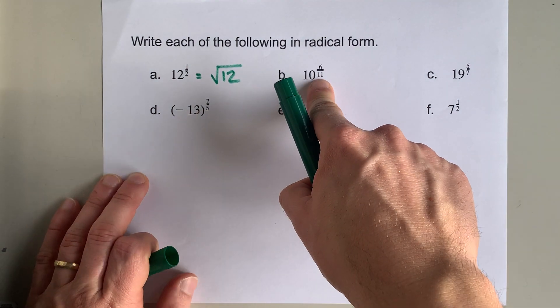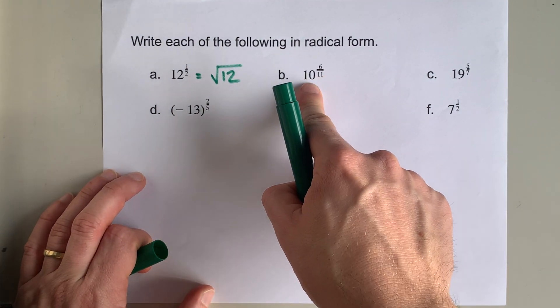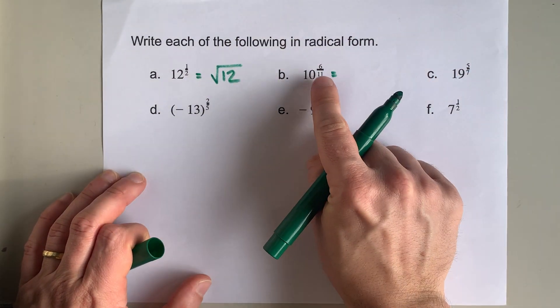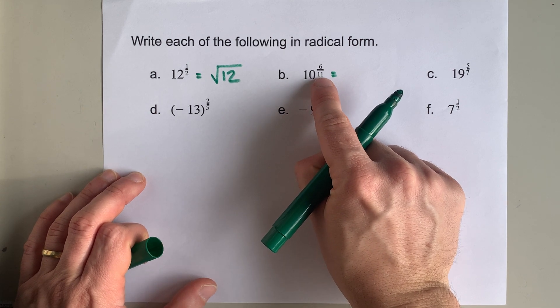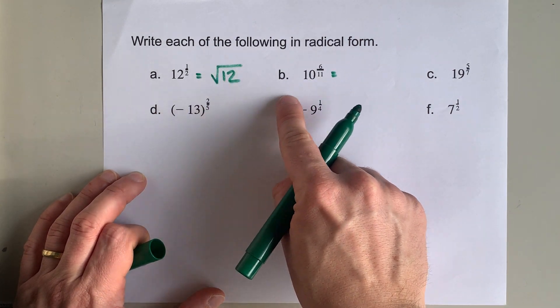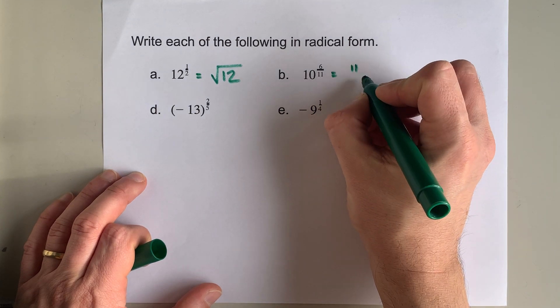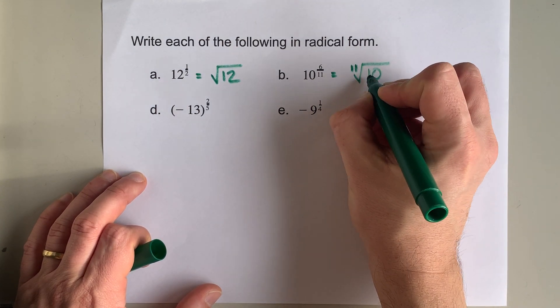Now, more complicated fractional exponents will call for something different. The rule is that the denominator of this fraction is the type of radical you're taking. In this case, it's the 11th root, which is something I've never actually seen in the real world, but it does exist in math.